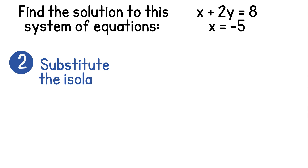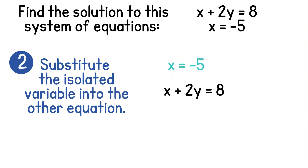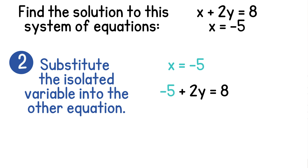Now that we've chosen the equation that we'll use, we're going to substitute the isolated variable into the other equation. So we're going to take that x equals negative 5 and substitute it into the first equation. So x will become negative 5. So we have negative 5 plus 2y equals 8. Now we only have one variable left.